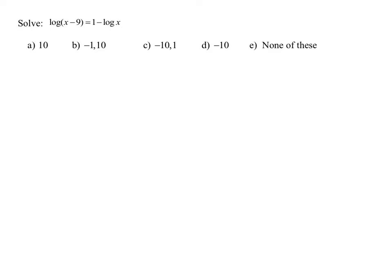The way we want to solve those is we want to get all our logs on one side. So I'm going to write my equation again: the common log of x minus 9 is 1 minus the common log of x. The first thing I'm going to do is add the common log of x to both sides.